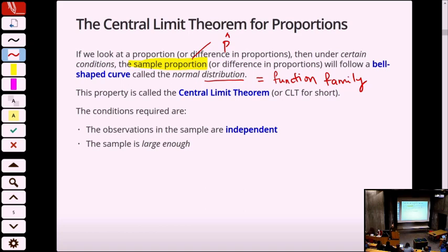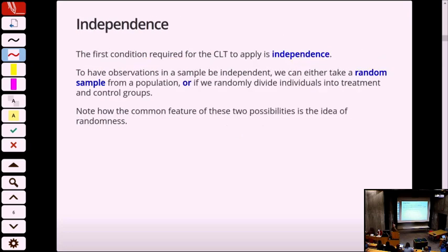The central limit theorem has two conditions. One: you must have independent samples. Two: the sample must be large enough. The first condition required is independence. To have observations in a sample be independent, we can take a random sample from a population — that will suffice — or we can take a given set of users or patients and randomly assign them control or treatment, like we did in all the examples we've done so far. We've integrated the concept of randomness, and that is what is required to say that samples are independent.